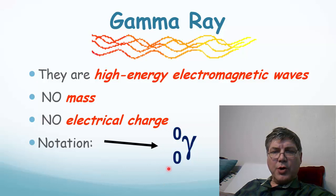We write them in nuclear notation like this with a zero for the mass number and a zero for the atomic number to indicate that they have no effect on the actual composition of the nucleus. They're just the nucleus settling down into a more stable state.